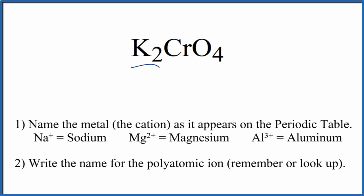To write the name for K2CrO4, the first thing we need to recognize is K, that's potassium, that's a metal. In this CrO4, this is a polyatomic ion, it's called the chromate ion.